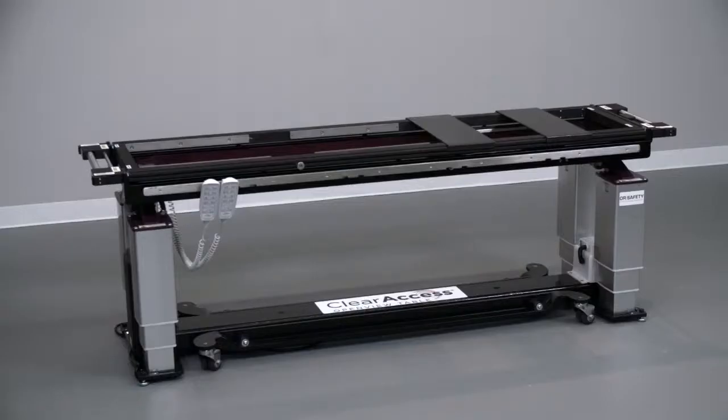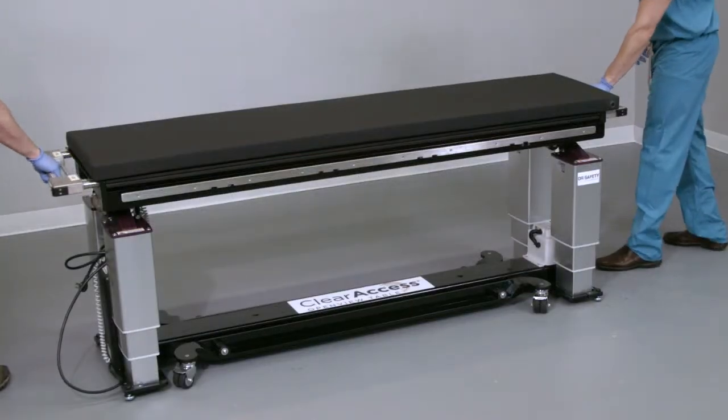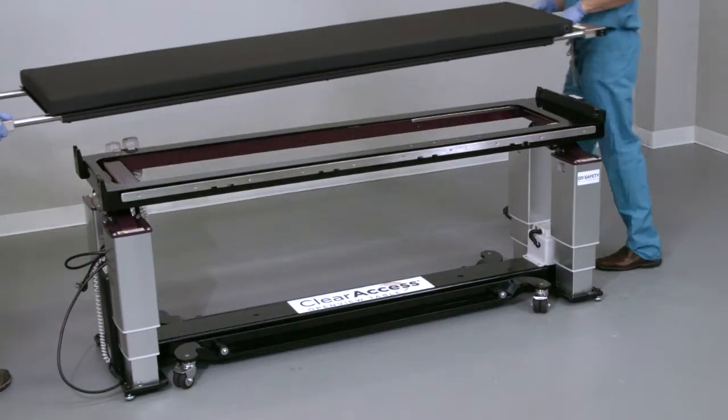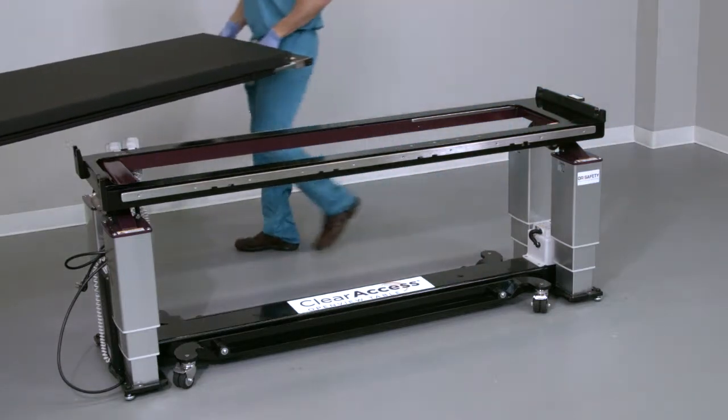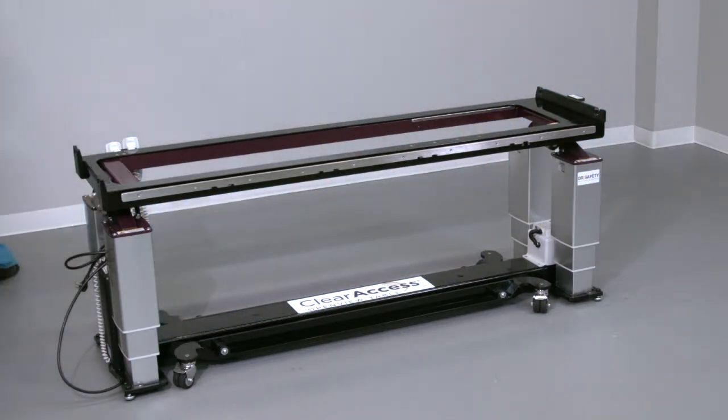If the prone platform is not already installed, it's likely that the supine platform, or flat top, is in place. If this is the case, remove the supine platform by grasping the silver handles at both ends of the table. Extend the handles by pulling outward, then lift and remove the supine platform from the ClearAccess table base.